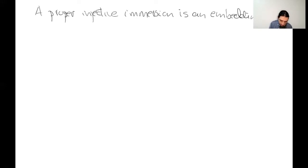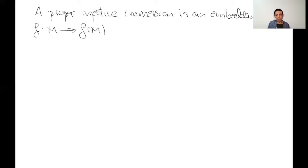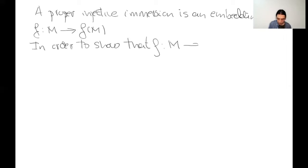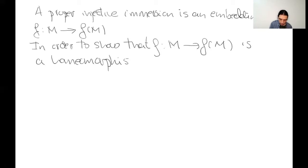We have a map from M to its image. This map is differentiable — in particular, it is continuous — and it is injective because F is injective. In order to show that this map is a homeomorphism, what we need to show is that the inverse map is also continuous. It is sufficient to show that the image of a closed set is still closed.